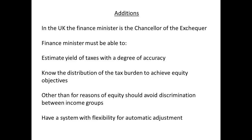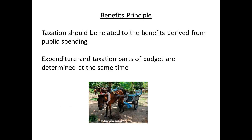There should be no discrimination between income groups other than for the purpose of pursuing equity. Finally, any tax system should have flexibility for automatic adjustment. There would be little purpose in having a system that required frequent adjustments since the cost of administration would rise. The purpose of laying out a budget, which is usually done only once or twice a year, is so that expenditure and taxation are determined at the same time. This also makes it clearer to taxpayers what the revenue is to support.